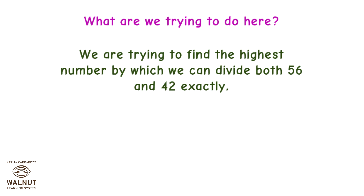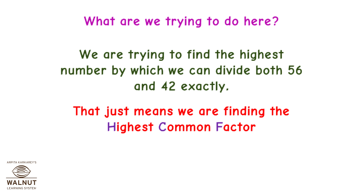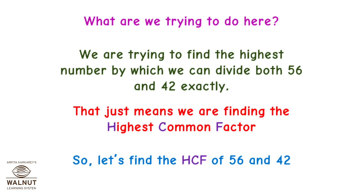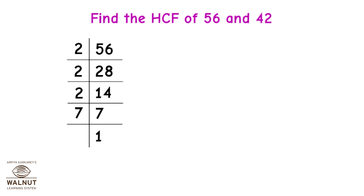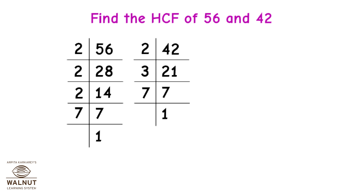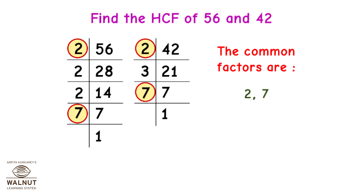What are we trying to do here? We are trying to find the highest number by which we can divide both 56 and 42 exactly — that means we are finding the highest common factor. So let's find the HCF of 56 and 42. 56 divided by 2 gives 28, divided by 2 gives 14, divided by 2 gives 7, divided by 7 gives 1. 42 divided by 2 gives 21, divided by 3 gives 7, divided by 7 gives 1. The common factors are 2 and 7. HCF = 2 × 7 = 14.